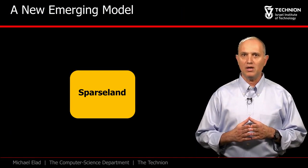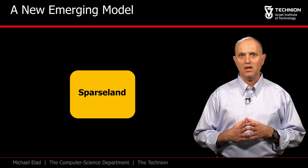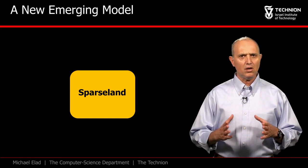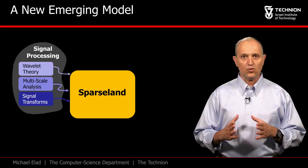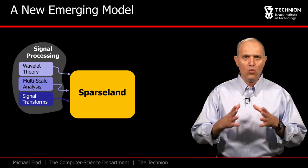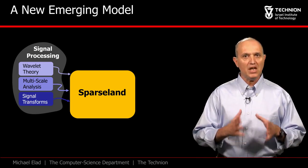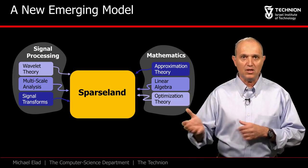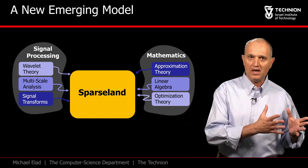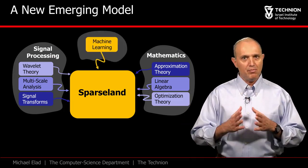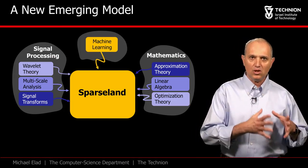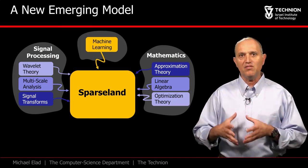The SparseLand model is not coming out of the blue. It is, in fact, relying on the vast knowledge gathered in the past several decades in several close-by disciplines. Transforms in signal processing, and especially Wavelet theory, provides some of the foundations for this model. SparseLand is relying on mathematical concepts studied in approximation theory and tools taken from linear algebra and optimization. And beyond these, SparseLand borrows ideas from machine learning in the context of adapting the model to a given data source.